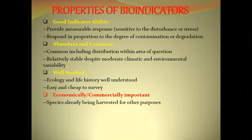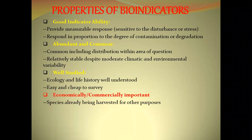What are the properties of a good bioindicator? They must have good indicator properties — their presence must indicate something. They are abundant, they are common, their biology is well studied, they are easy and cheap, and they are commercially or economically important. They are species already harvested for other purposes.